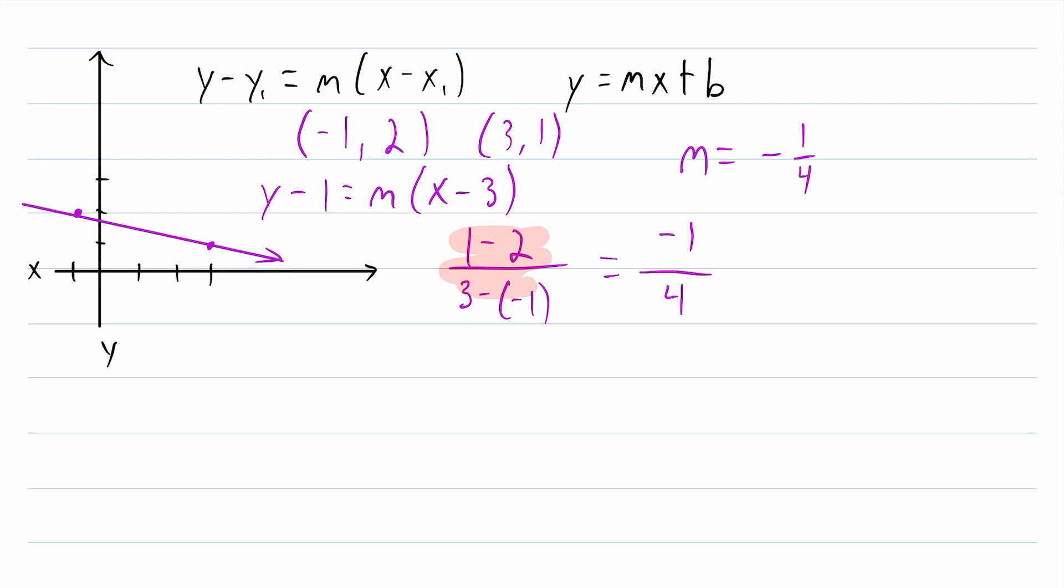And remember when finding slope, instead of doing 1 minus 2 in the numerator, we could have done 2 minus 1. But if we did that, then in the denominator, we also would have had to do negative 1 minus 3. We just have to make sure we go in the same order in the numerator and denominator, either from this point to this point, or from this point to this point.